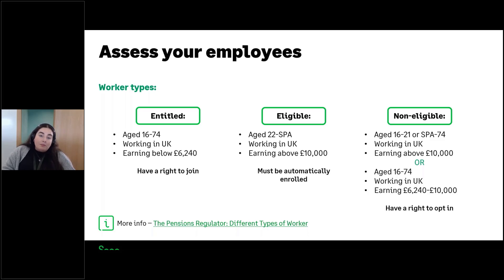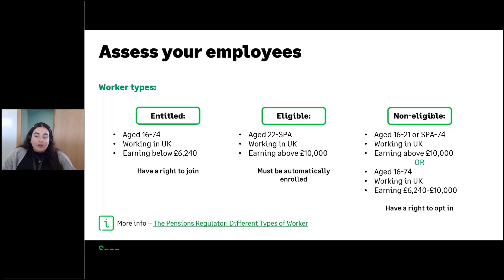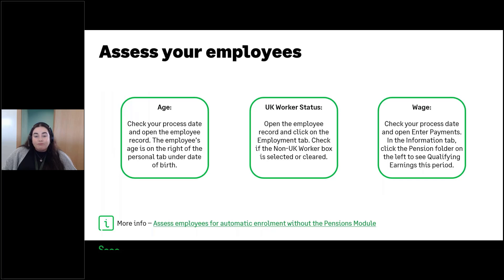Non-eligible employees are people aged 16 to 21 or state pension age to 74 working in the UK earning above £10,000, or employees aged 16 to 74 working in the UK earning between £6,240 and £10,000. These employees have a right to opt into the scheme. The difference from entitled workers is that if a non-eligible employee opts into the scheme, the employer must contribute, whereas for entitled workers the employer can choose whether to contribute. Whether you assess employees manually or via the pension assessment, three things are checked to determine worker type: age, UK worker status, and wage.